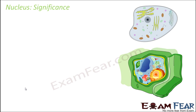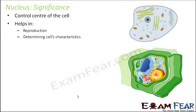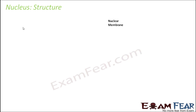Let us look at the significance of nucleus. It is the control center of the cell because it controls all the metabolic activities which take place inside the cell. It also helps in reproduction — basically the nucleus is that part of the cell which consists of all the genetic material. Therefore it plays the most crucial role in reproduction. It also helps in cell division and in determining cell characteristics, because the genes decide the characteristics of the cell.